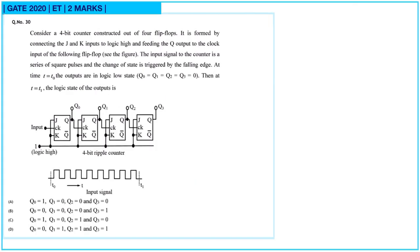Next, question 30: consider a 4-bit counter constructed from 4 JK flip-flops, with J and K inputs tied to logic high and the Q output feeding the clock of the next flip-flop. The input is a series of square pulses and state changes are triggered on the falling edge. At t = t0, all outputs are logic low. Find the logic state at t = t1.